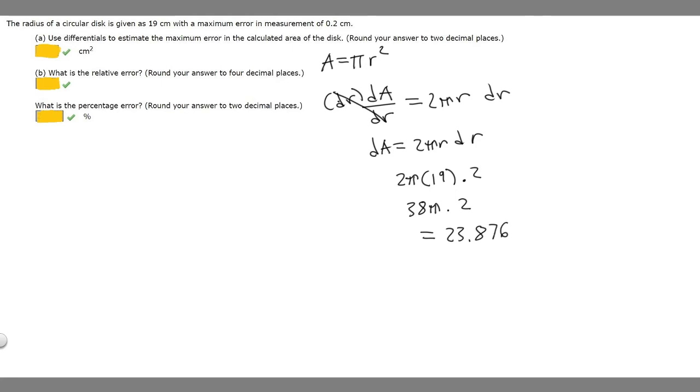It says to round to two decimal places. Since the next digit is 6, we round up, giving us 23.88. Now let's start with part B.